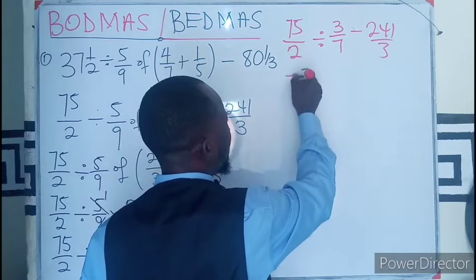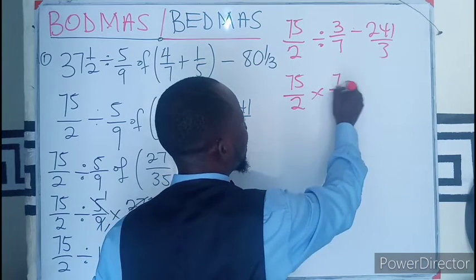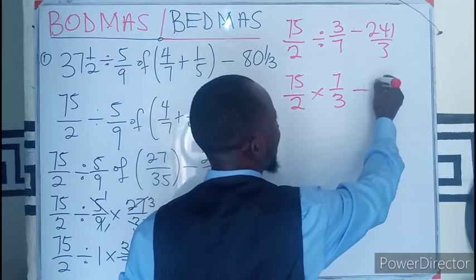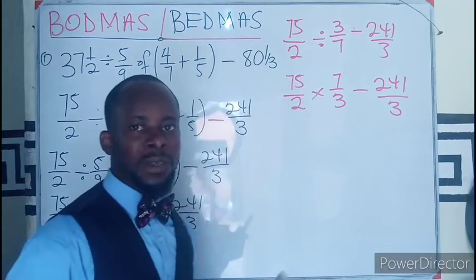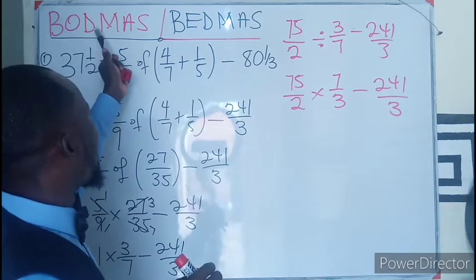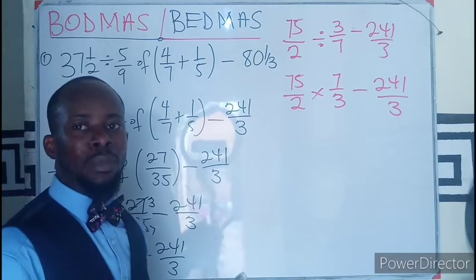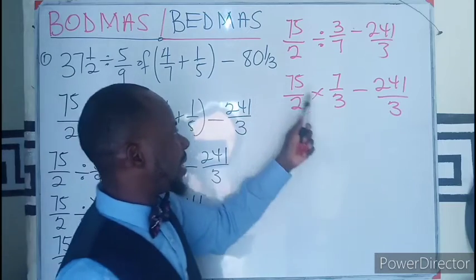So this becomes 75 over 2 times 7 over 3 minus 241 over 3. Just following the procedure, division. Now we get our multiplication, but still there's our multiplication, but still there's a division here.